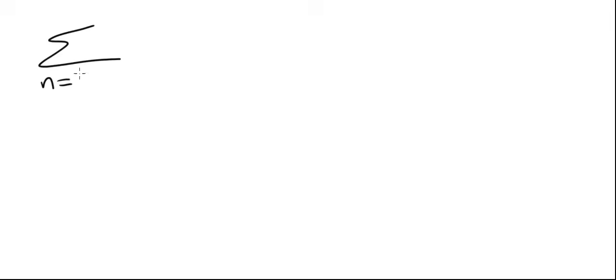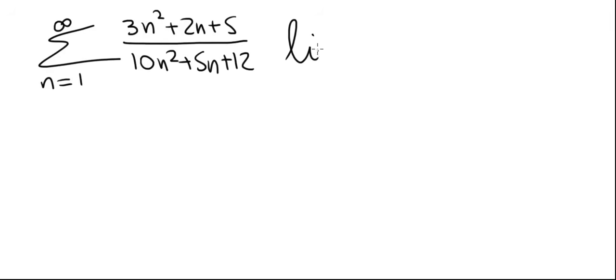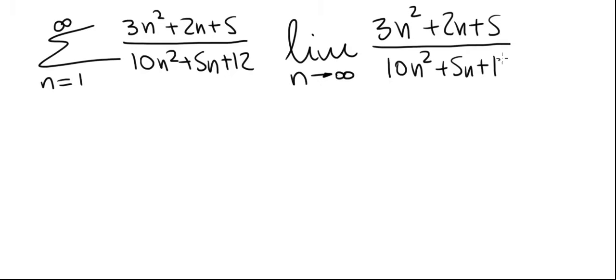The series is the summation from 1 to infinity of 3n squared plus 2n plus 5 divided by 10n squared plus 5n plus 12. And we're going to evaluate the limit as n goes to infinity of 3n squared plus 2n plus 5 divided by 10n squared plus 5n plus 12.